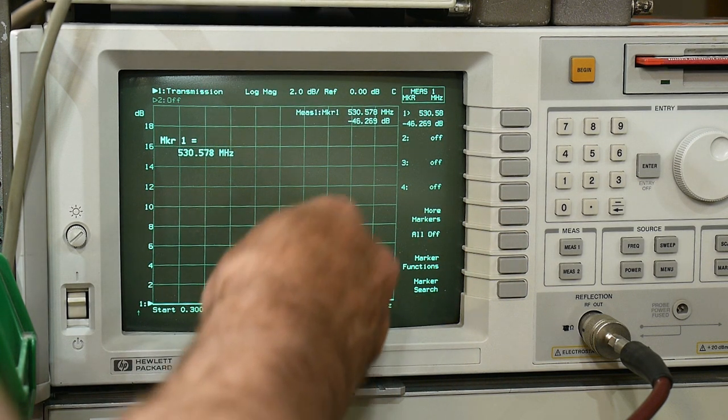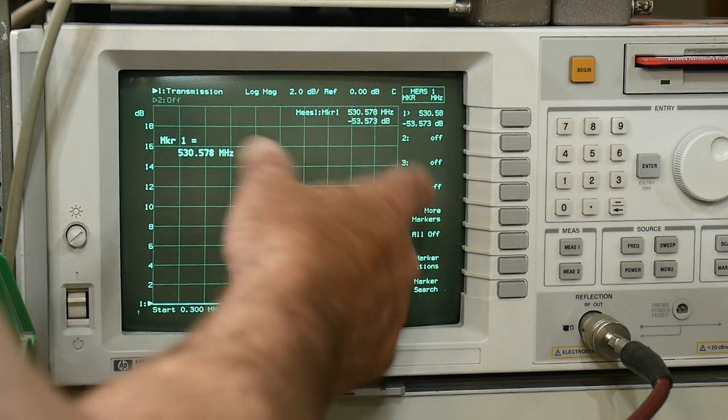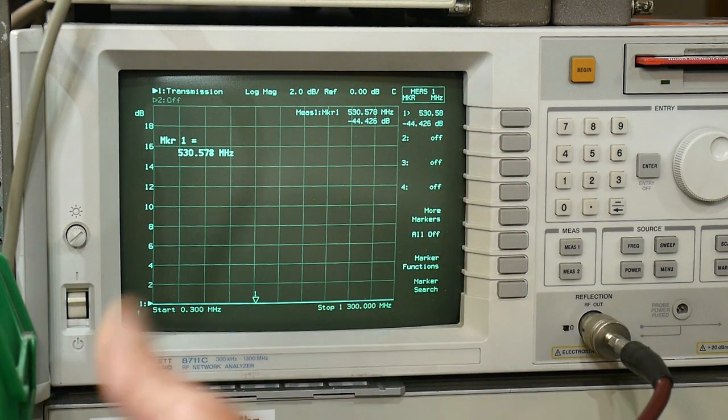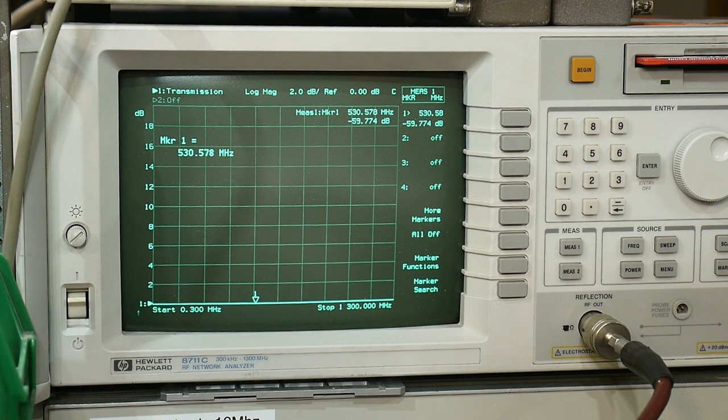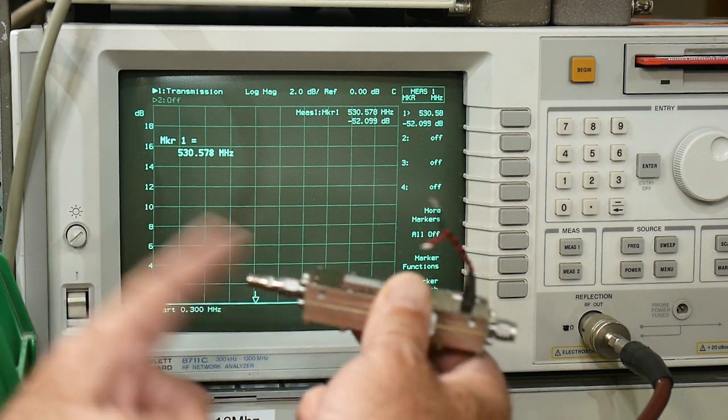This VNA has the capability of lowering the amount of output power it has, but a lot of VNAs are fixed, like the nano VNA is fixed. So if you need less power going in, you're going to have to put an attenuator on the input as well.